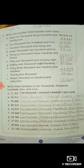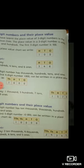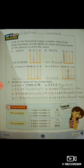Now move to the next page, page number 12. Here we have 4-digit numbers and their place value. As we learnt in our previous lecture about 4-digit numbers and their place value. Now move to page number 13 — let us practice these numbers.